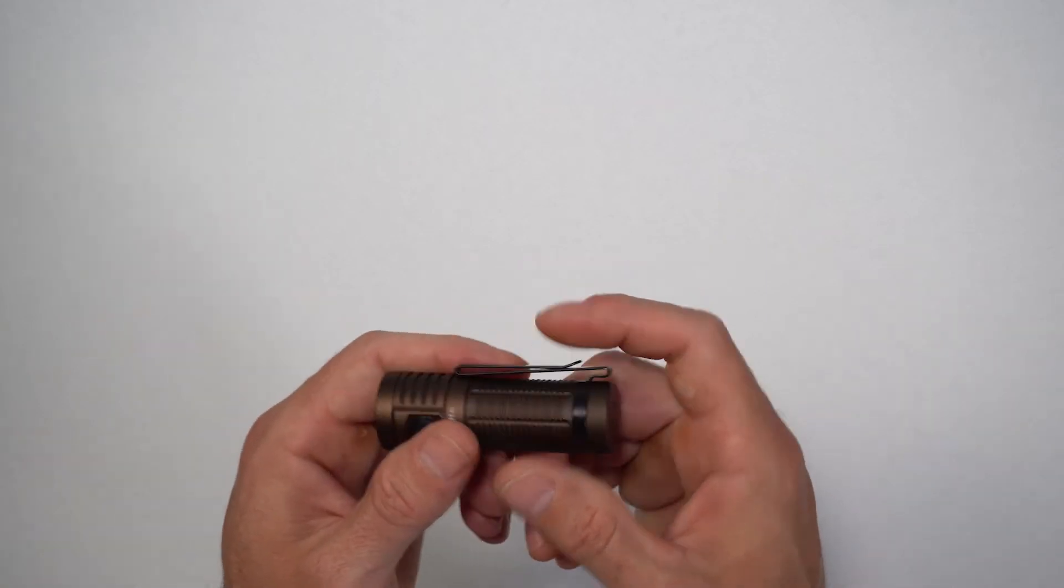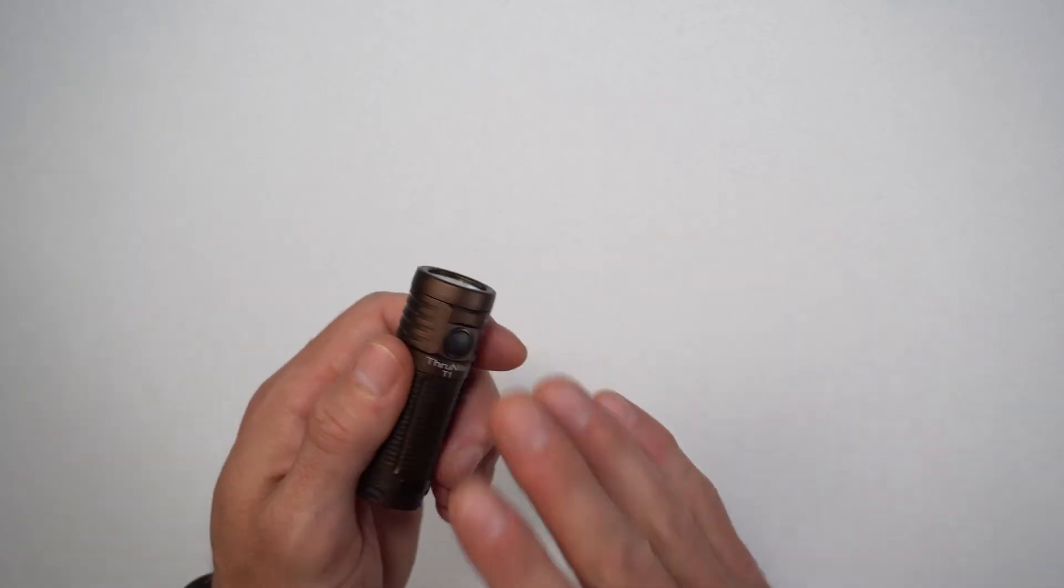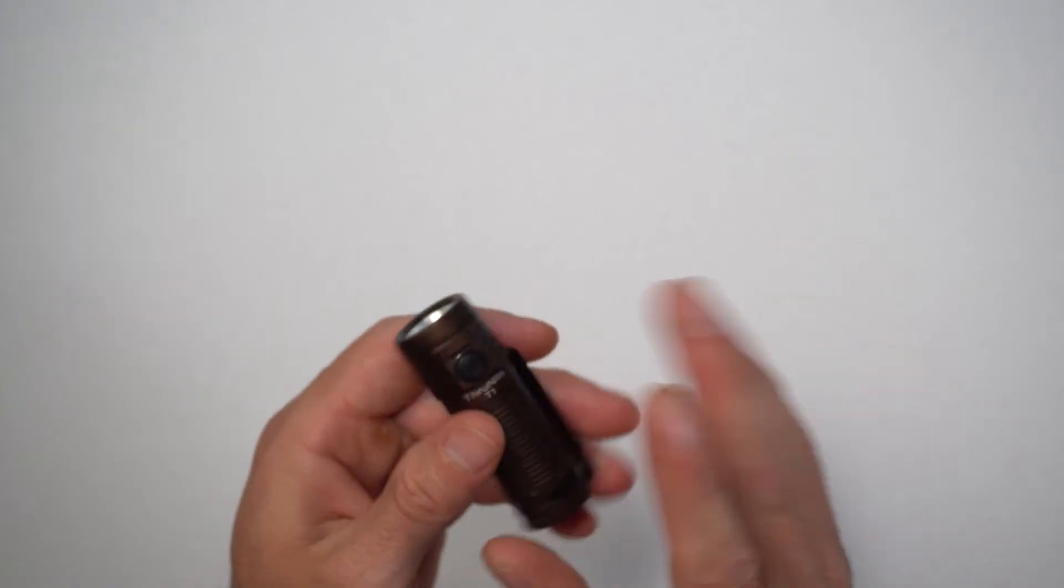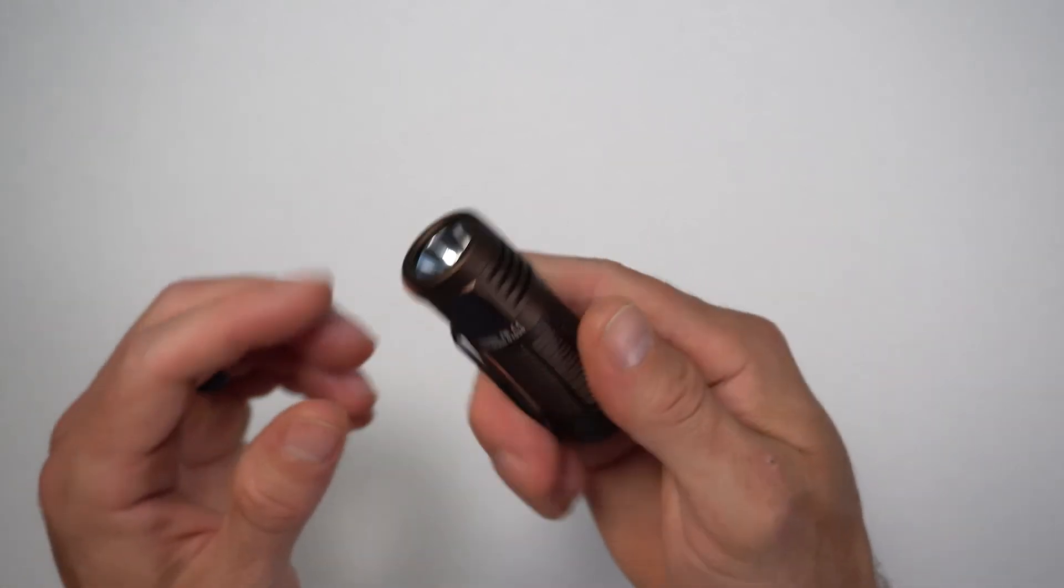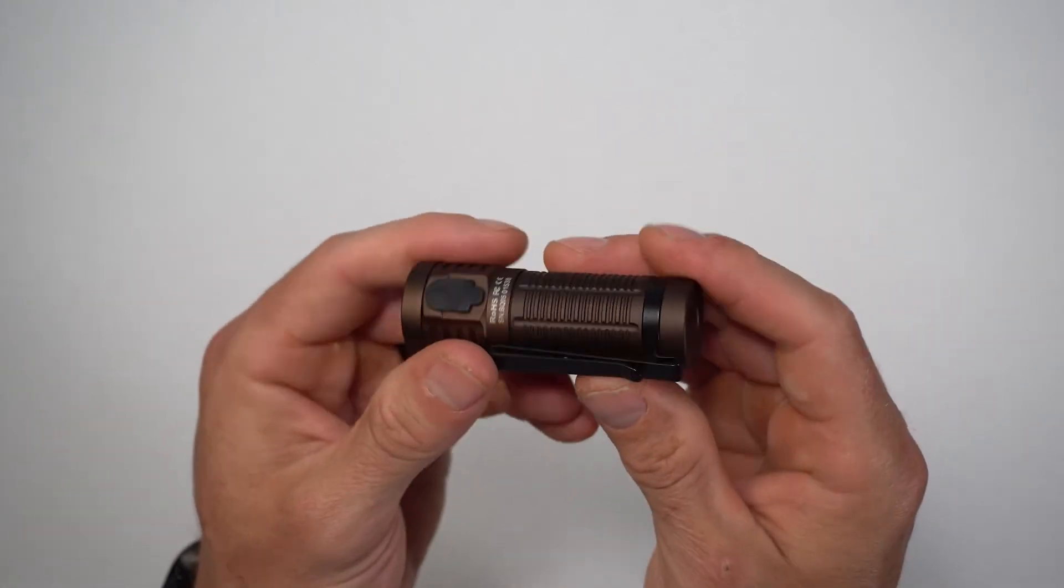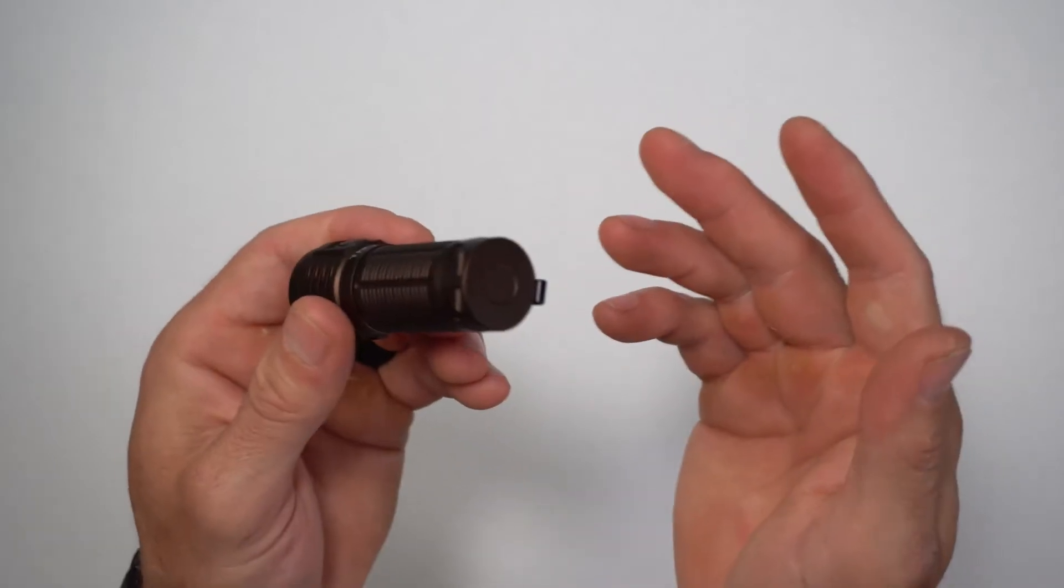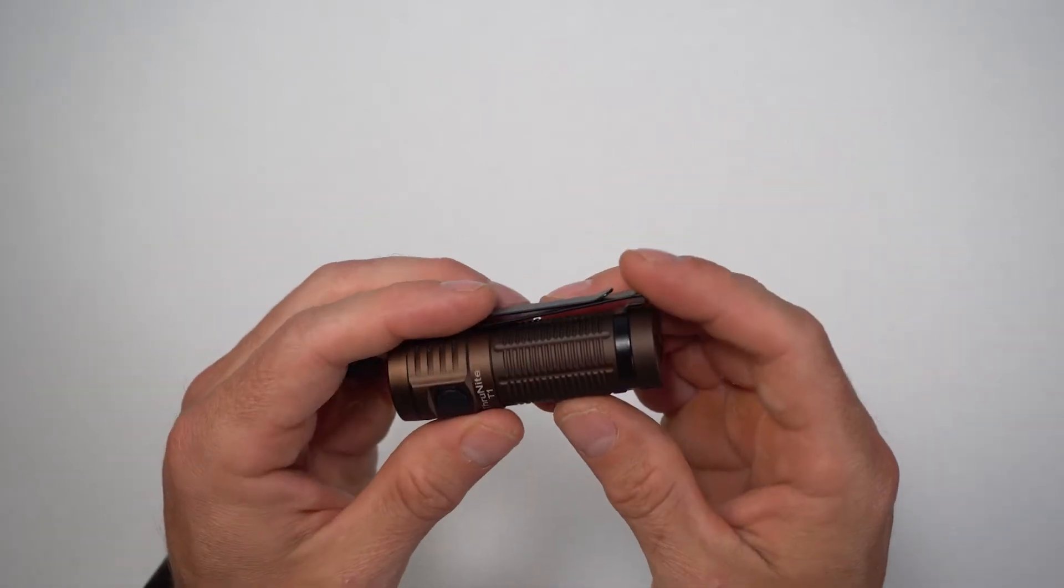And then the price, depending on the finish, goes from 35 to 45. The black is 35. The desert tan that I have, and then the forest green, I believe, are $45 from the manufacturer.